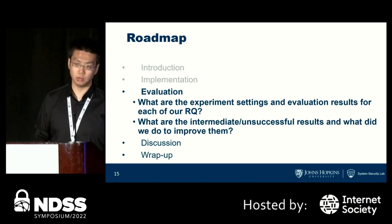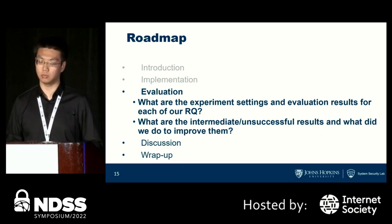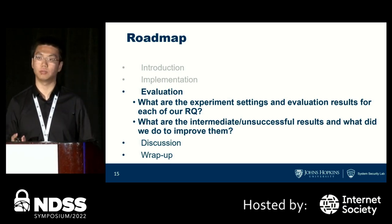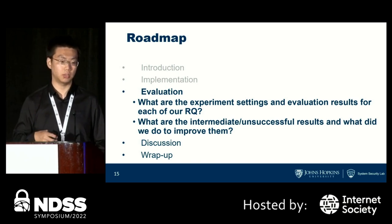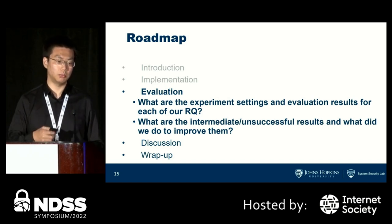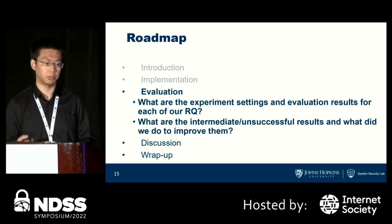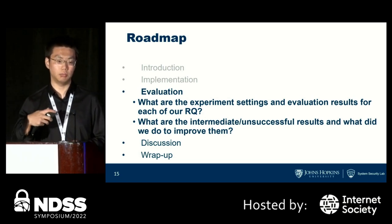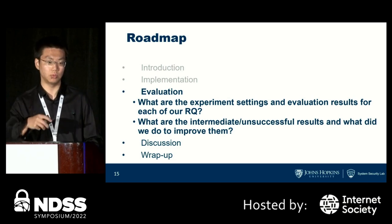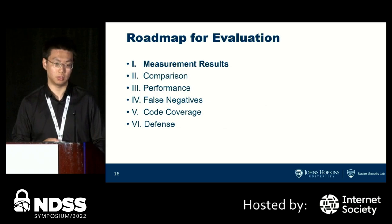After that we discuss the evaluation. We have six aspects of our evaluation, going through each in the following slides. For each aspect we discuss the experimental settings, evaluation results — both intermediate and final results — and what we did to improve from unsuccessful intermediate results to the final evaluation results presented in the paper.